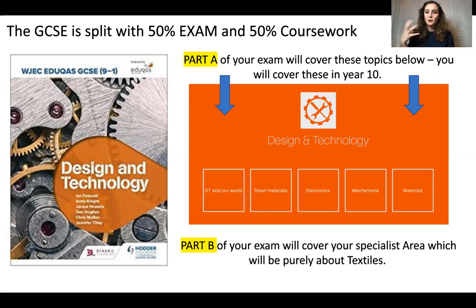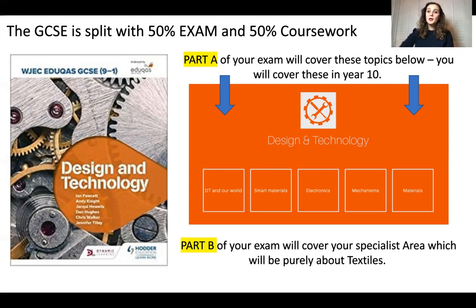Regardless of whether you want to focus on textiles, you still need to learn the five core DT topics — that is part of the specification. So don't be surprised if you are covering some lessons on the basic properties of wood, because as a DT student you need to know that for your exam.